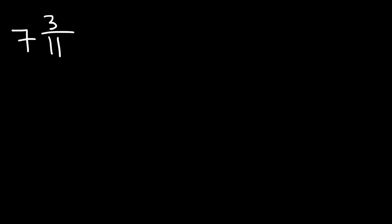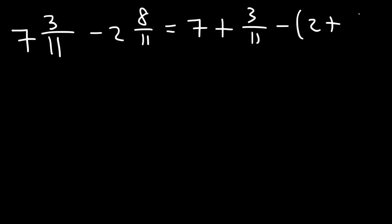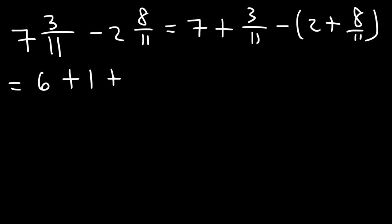Now let's work on this problem: 7 and 3 over 11 minus 2 and 8 over 11 — very similar to the last problem. Expanding everything: 7 plus 3 over 11, minus 2 plus 8 over 11. We take a 1 from 7 and replace 7 with 6 plus 1. Distributing the negative sign gives us negative 2 minus 8 over 11.